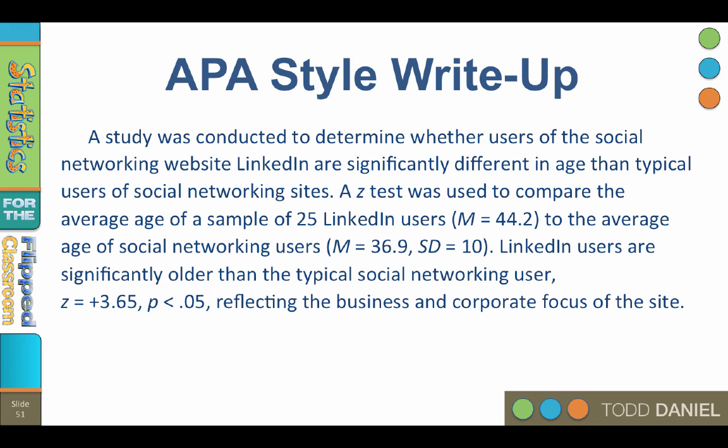A study was conducted to determine whether the users of the social networking website LinkedIn are statistically significantly different in age than typical users of social networking sites. A z-test was used to compare the average age of a sample of 25 LinkedIn users, mean of 44.2, to the average age of social networking users, mean of 36.9, standard deviation of 10. LinkedIn users are significantly older than the typical social networking user. Z equals positive 3.65, p less than 0.05, reflecting the business and corporate focus of the site.